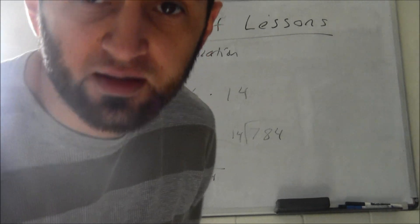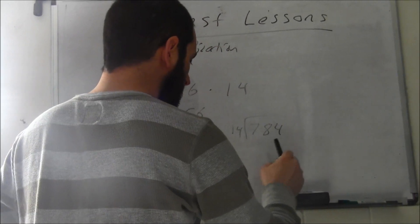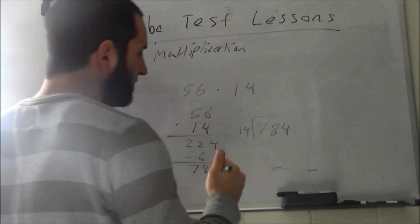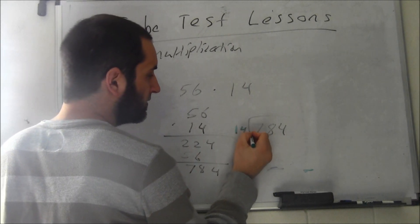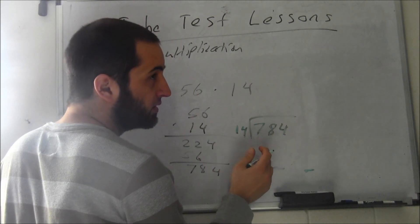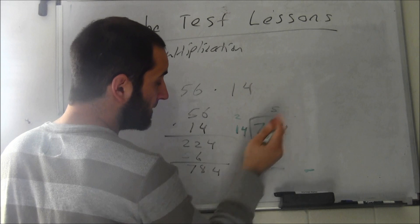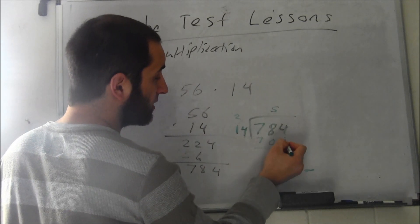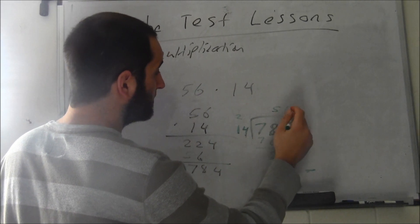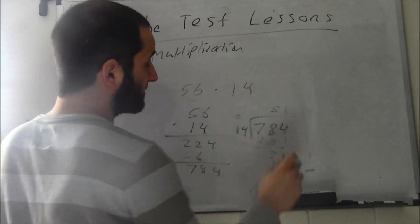How many times does 14 go into 784? Let's try 5 - 5 times 14 is 70. Subtract that, carry the 4 down to get 84. 14 times 6 is 84, so it's 56. That's how you check that.